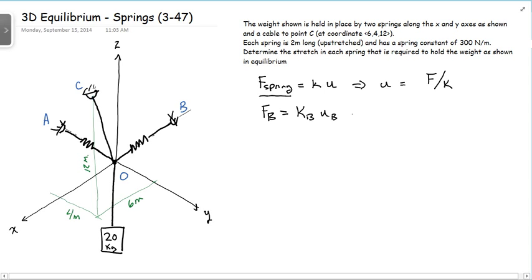But since the spring constant in both of these, for both of the springs is the same, I can just say this is K times UB. The force in spring A is equal to K times UA. So that's the first part of it.